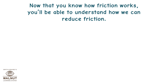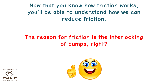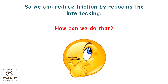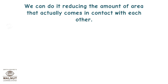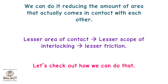Now that you know how friction works, you will be able to understand how we can reduce friction. The reason for friction is the interlocking of bumps. So we can reduce friction by reducing the interlocking. How can we do that? We can do it by reducing the amount of area that actually comes in contact with each other. Lesser area of contact means lesser scope of interlocking, which means lesser friction.